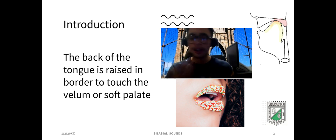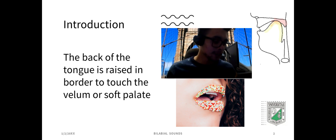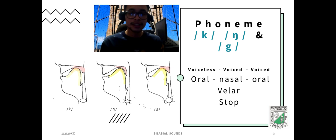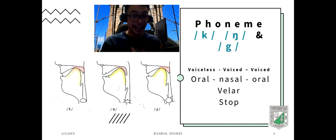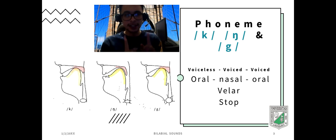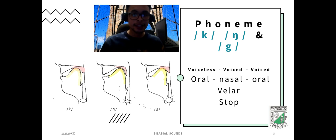We have a lot of information about these sounds. As we can see in the image, some of them are oral — the one that looks like a k is oral — and the one that looks like an n with a g, the sound between those, is nasal, meaning the air goes through the nose.